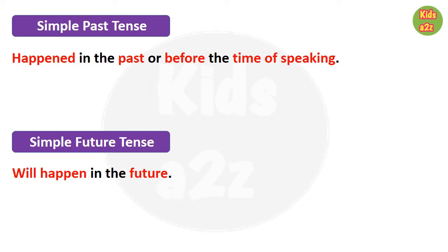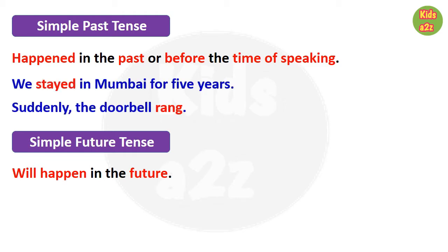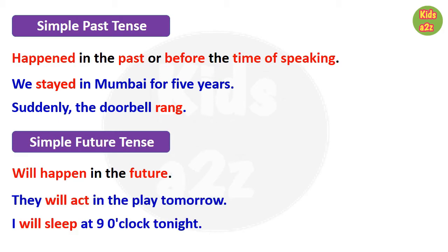Simple past tense means actions that happened in the past or before the time of speaking, like 'We stayed in Mumbai for five years' or 'Suddenly the doorbell rang.' The ways to change verbs to past form will be discussed in a separate video. Simple future tense means actions that will happen in the future, like 'They will act in the play tomorrow' or 'I will sleep at nine o'clock tonight.'